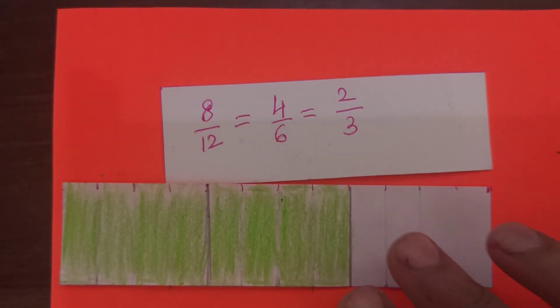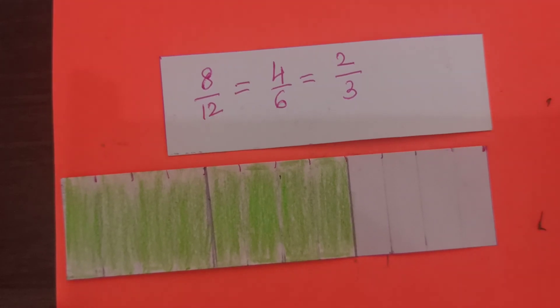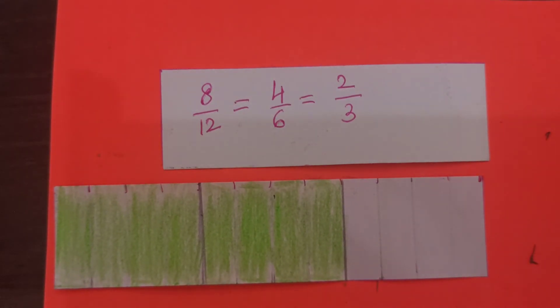So, this is the way we are supposed to do these simplest fractions. Just try to make more paper strips and try to have fun with them. Try to reduce the number of parts and see what happens.